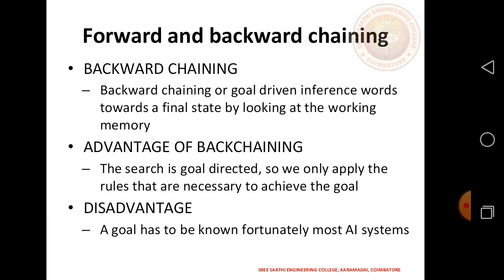Backward Chaining is goal-driven inference, working toward the final state by looking at the working memory. Its advantage is that it searches the goal directly, so only rules necessary to achieve the goal are applied. A disadvantage is that the goal may not be traceable in most AI systems.